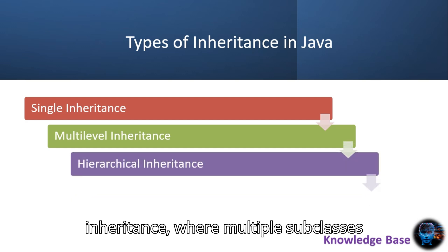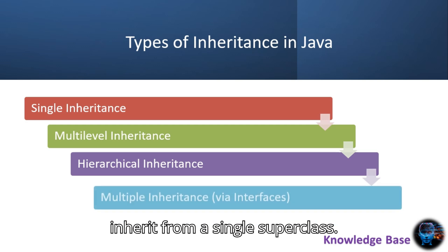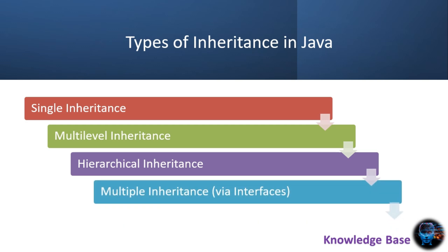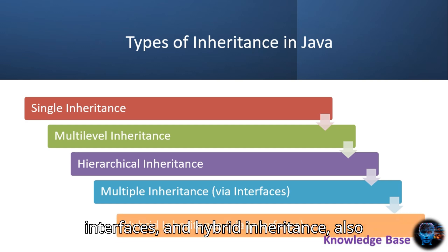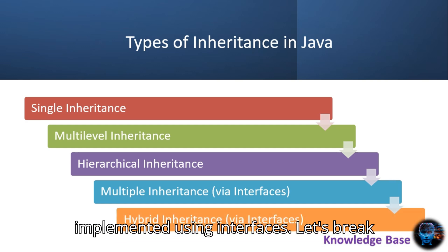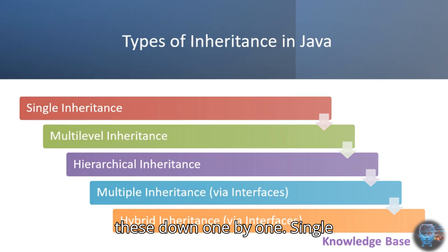Hierarchical inheritance, where multiple subclasses inherit from a single superclass. Multiple inheritance, achieved through interfaces, and hybrid inheritance, also implemented using interfaces. Let's break these down one by one.